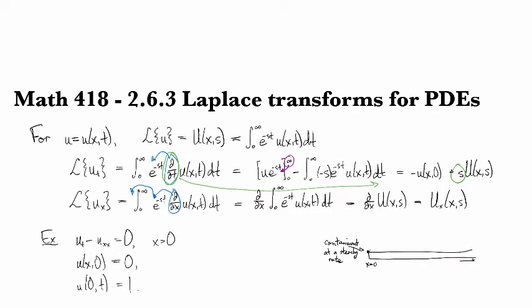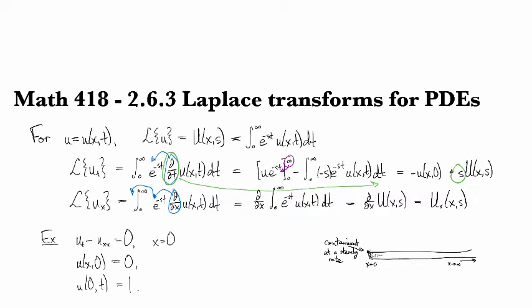And so we're releasing contaminant at a steady rate here at x equals zero. And then it goes off towards infinity off that way. And so we're pumping in effluent, and we want to know how this stuff diffuses out away from the source. That's the meaning of u(0,t) equals one.